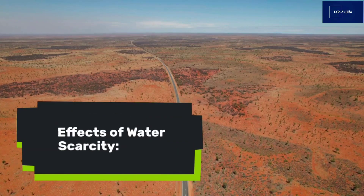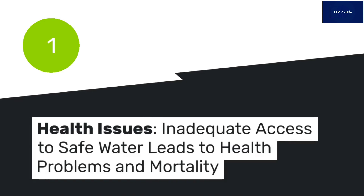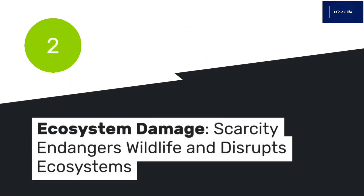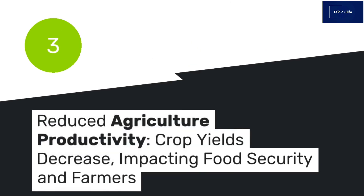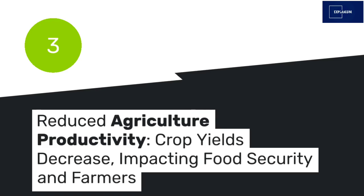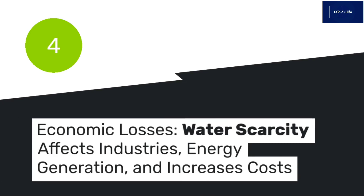Effects of water scarcity: 1. Health Issues — inadequate access to safe water leads to health problems and mortality. 2. Ecosystem Damage — scarcity endangers wildlife and disrupts ecosystems. 3. Reduced agricultural productivity — crop yields decrease, impacting food security and farmers. 4. Economic losses — water scarcity affects industries, energy generation, and increases costs.